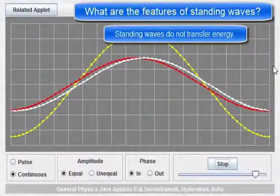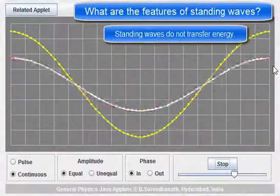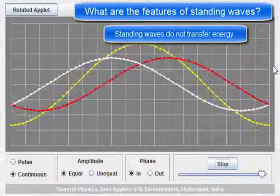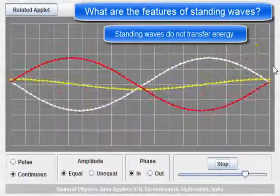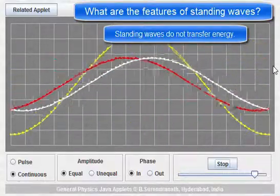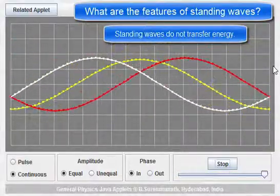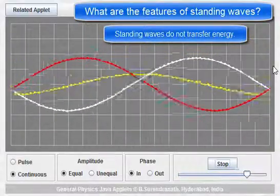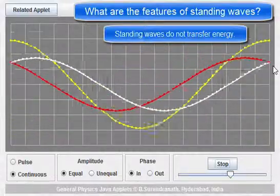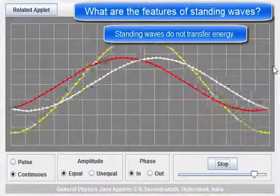We can understand that because we have two waves of equal amplitude and frequency traveling in opposite directions. So technically there should be no net transfer of energy to the left or to the right. What does result is this standing wave, which, although it stores some energy, doesn't transfer any energy to the left or to the right in this situation.